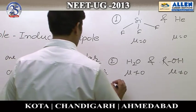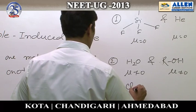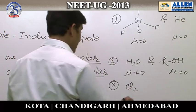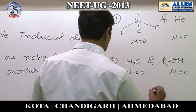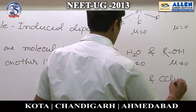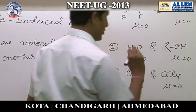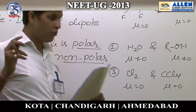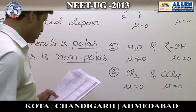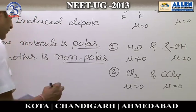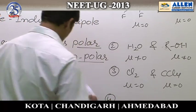Third option: Cl2 is symmetrical, mu = 0, and CCl4 also has mu = 0. Both are non-polar — same story, this option is also rejected.